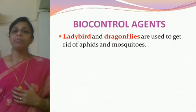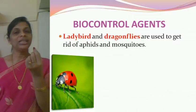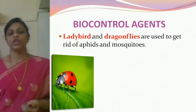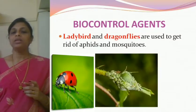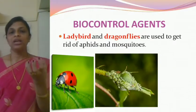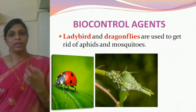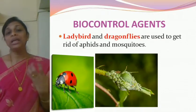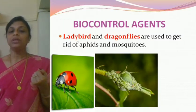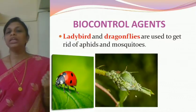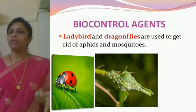The first biocontrol agent is the ladybird. It's not a bird — it's a small insect, also called a beetle. This beetle is used to get rid of aphids. Aphids are small insects — you will find them surrounding a rosebud and eating it away. The ladybird eats these aphids, so if a ladybird is present on the rose plant or nearby, it goes and eats away the aphids, thereby controlling them.